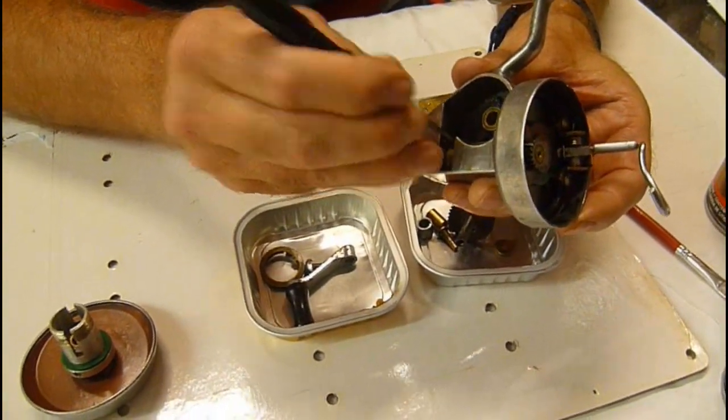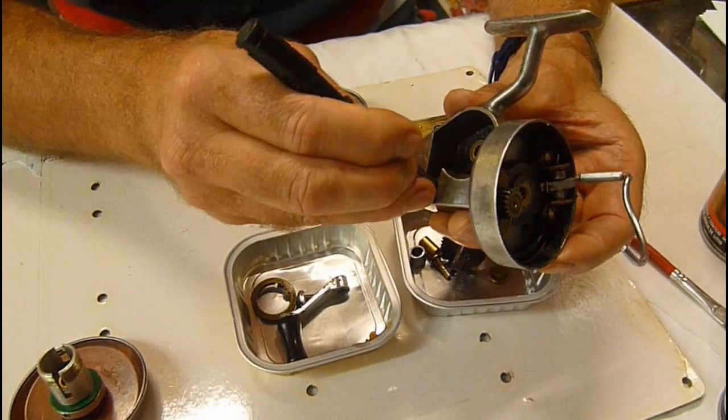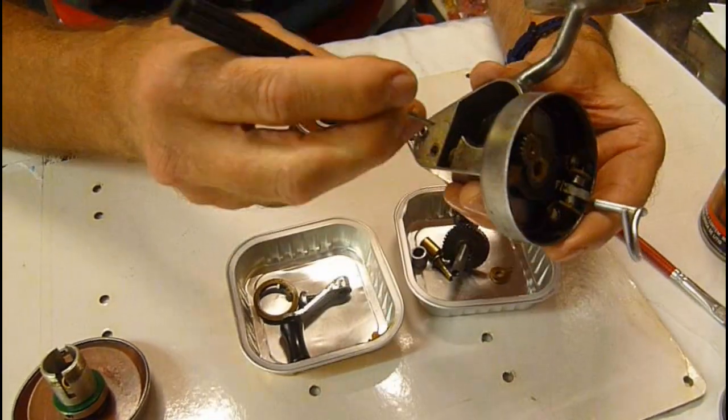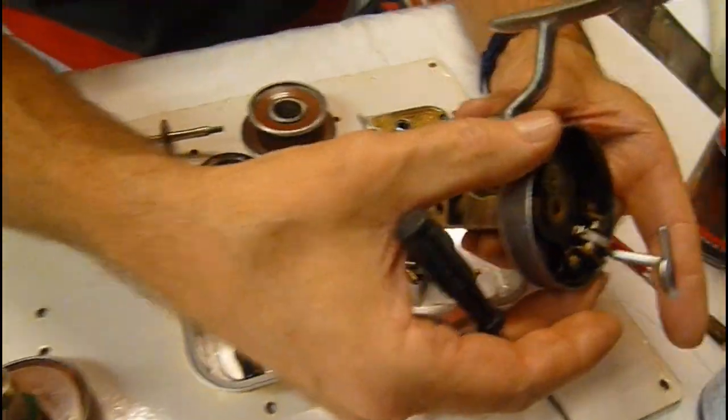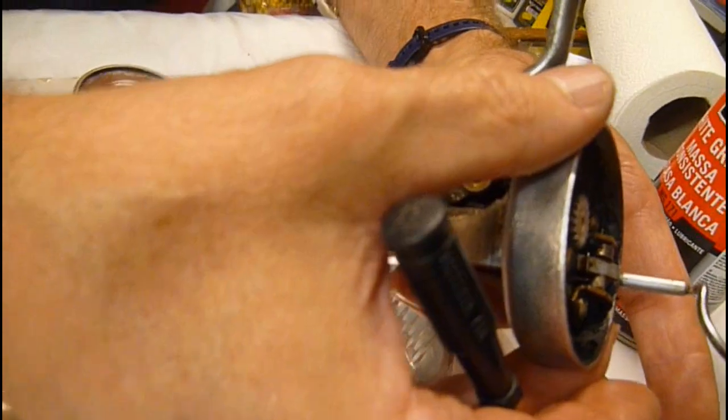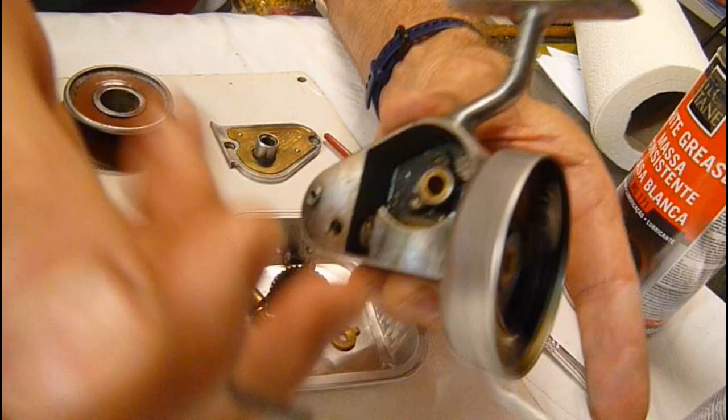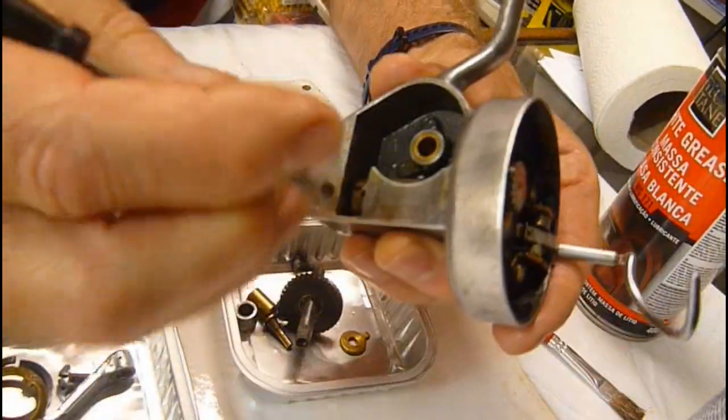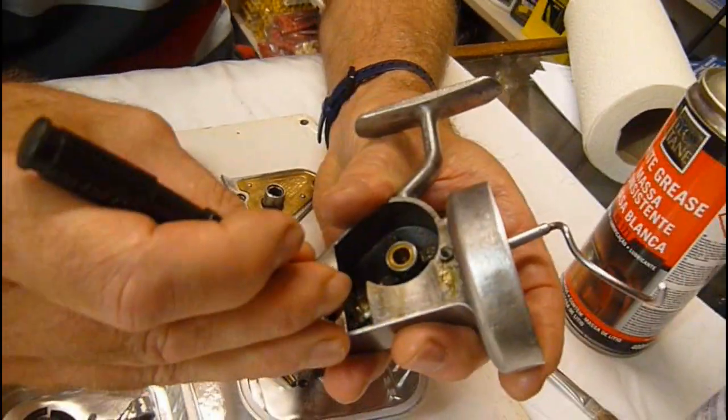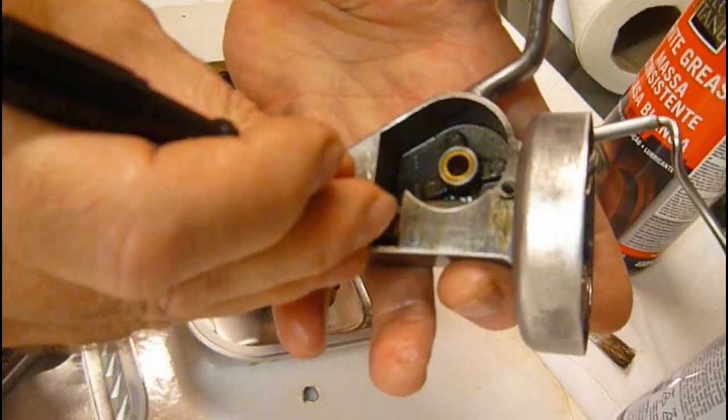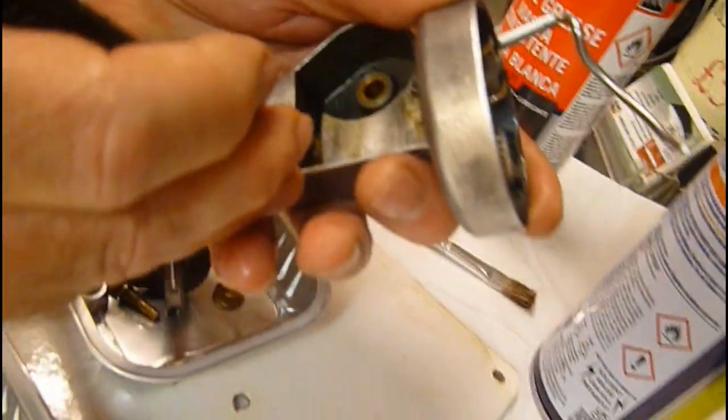If you're going to take a reel apart like this and you don't know them, then it's a good idea to either video yourself doing it or take pictures, or even write it down if you haven't got a phone. But all I'm doing now is adjusting the end float to make sure there's a tiny bit there and it's not loading any bearings or anything like that so that the fly takes nice and freely.